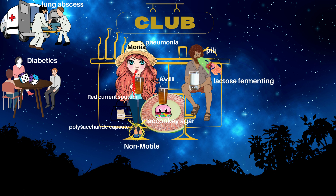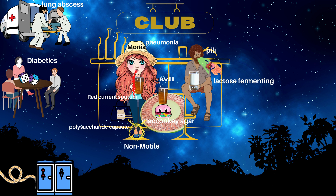Monia diverts her attention elsewhere to avoid going to the die-betting table. She notices that a mobile toilet is tied with a rope on the side. The mobile toilet is indicative of urinary tract infections and the rope on the side is indicative of siderophore, which is a molecule formed by Klebsiella pneumoniae. Siderophore is an iron-chelating compound.